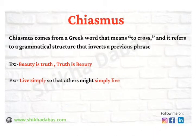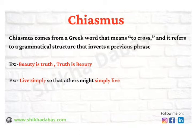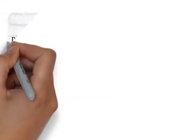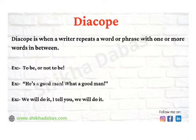The next literary device is chiasmus. It literally means 'to cross.' It refers to a grammatical structure that inverts a previous phrase — when you say something in the first line and flip the words in the next. For example, Keats' famous line: 'Beauty is truth, truth is beauty' — 'beauty is truth' is inverted to become 'truth is beauty.' Another example is Gandhi's line: 'Live simply so that others might simply live' — 'live simply' is inverted to 'simply live.'